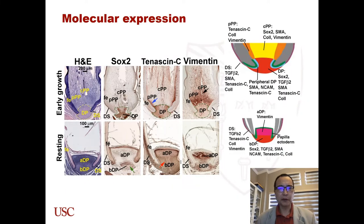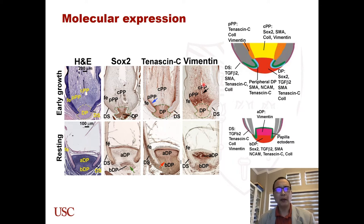We first characterized the molecular expression in the growth and resting phase feather follicle. We found that each dermal component has a distinct molecular expression profile. For example, SOX2 is expressed in the dermal papilla, SOX2 expressed in the peripheral part and dermal papilla, and SOX2 expressed in peripheral and central parts. When the feather entered the resting phase, SOX2 is only expressed in the basal part of the dermal papilla, and vimentin only expressed in the apical part of the dermal papilla.